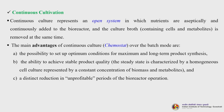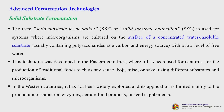Continuous culture is an open system in which nutrients are continuously and aseptically added to the bioreactor while culture growth containing cells and metabolites is removed at the same rate. The main advantages of continuous culture (chemostat) over batch mode include the ability to set optimum conditions for maximum long-term product synthesis, achieve stable product quality characterized by a homogeneous cell culture at constant biomass and metabolite concentrations, and a distinct reduction in unprofitable bioreactor downtime.